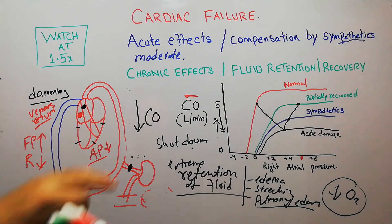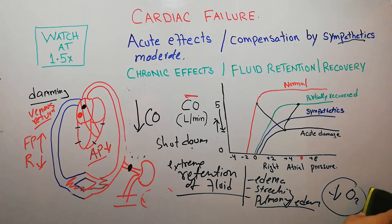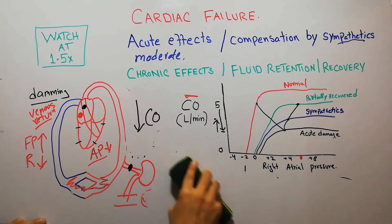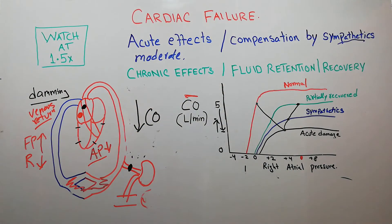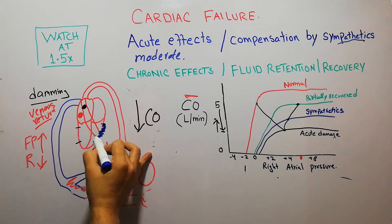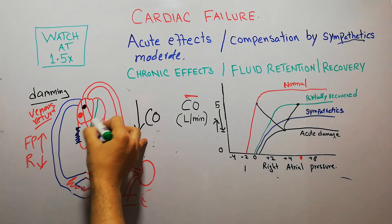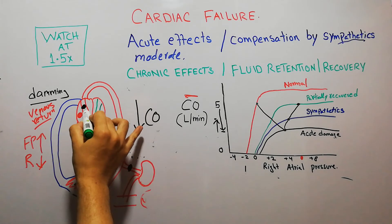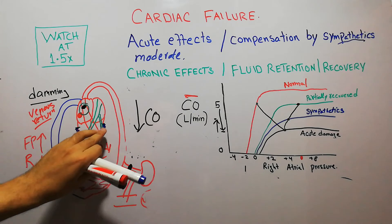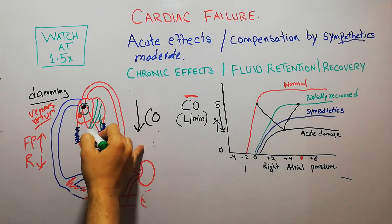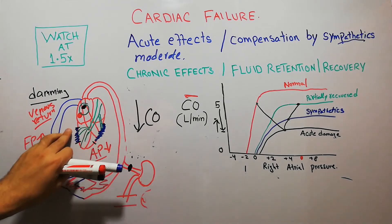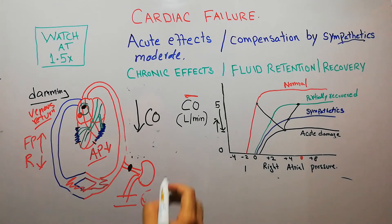Another chronic stage in cardiac failure is the recovery stage. If the damage is small or minimal, recovery of the heart will begin. The damaged areas will start receiving blood through collateral circulation — the normal blood vessels will form communicating vessels to the damaged areas, and those areas will start recovering. Even though the main blood vessel supplying the damaged area is blocked, collateral vessels form and blood flow is restored.